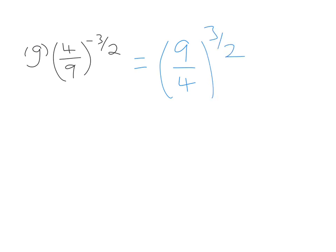Now the most common mistake people make here is they change the power to 2 thirds instead of just 3 over 2. So remember, you're just losing the minus sign and you're just flipping the fraction inside the bracket.